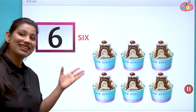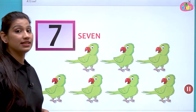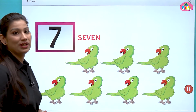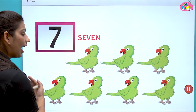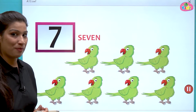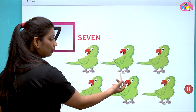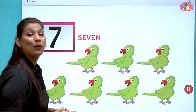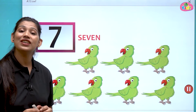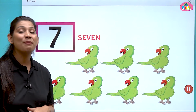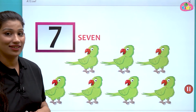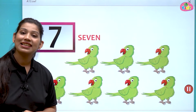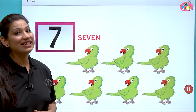After six comes number seven. Number seven is easy to make. Here we have parrots — let us count: one, two, three, four, five, six, seven. We have seven parrots in green color. The spelling is S-E-V-E-N, seven.